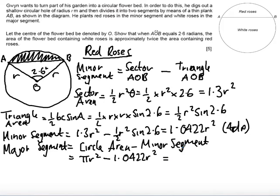Again, I'm not really interested in the R squared at the moment, it's more the coefficient of R. So I'm going to do pi minus 1.0422, which gives me an answer of 2.0994 R squared.